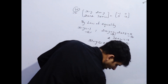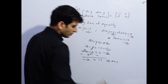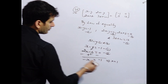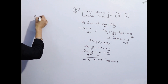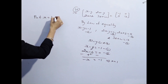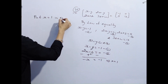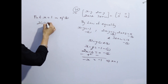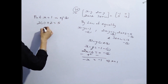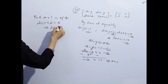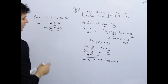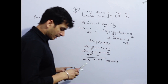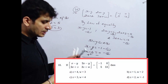अब options में z और w की value given है. Put x equal to 1 in equation 3: 2 into 1 plus z equal to 5, तो z equal to 5 minus 2, that is 3. z=3 सिर्फ option C में आ रहा है.